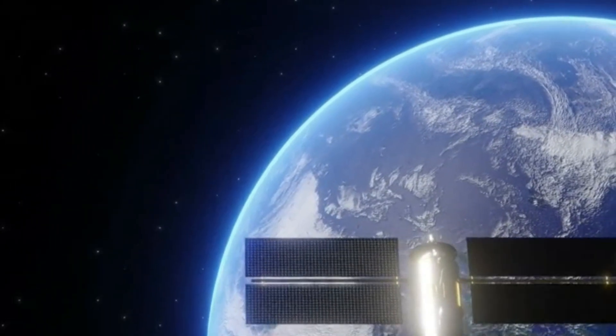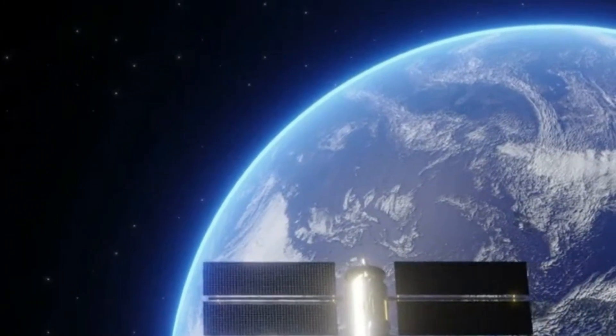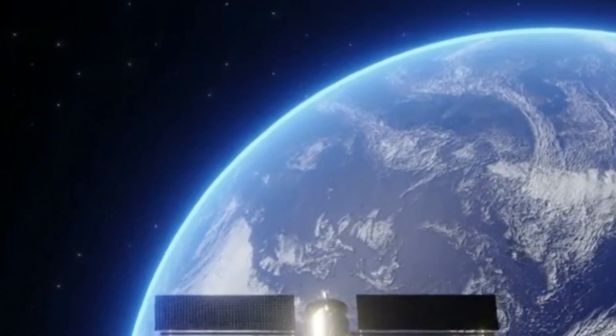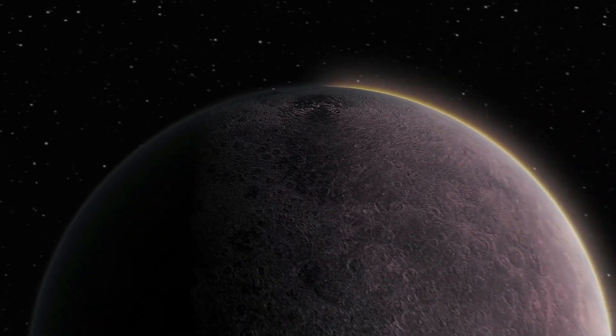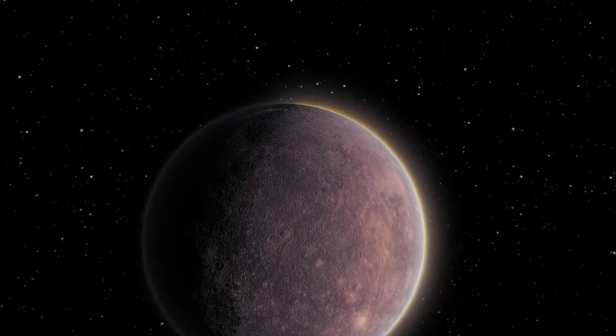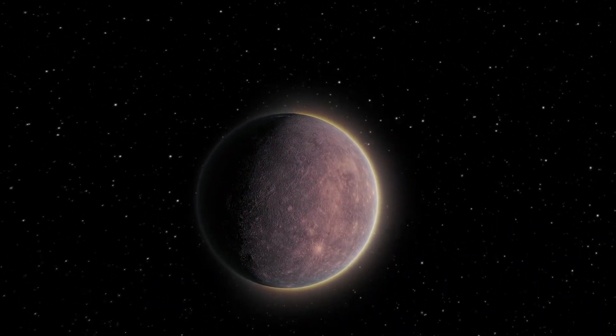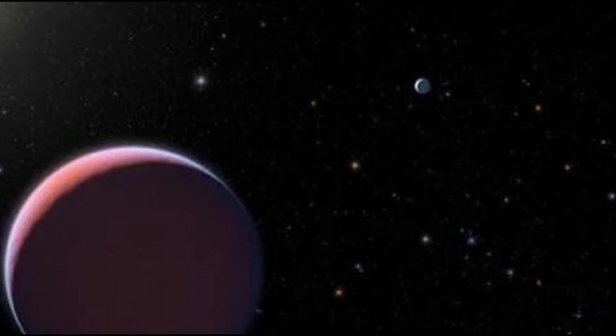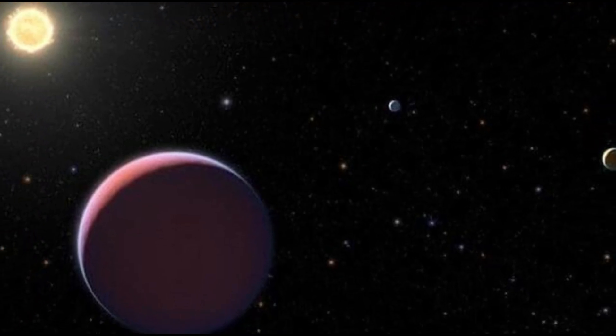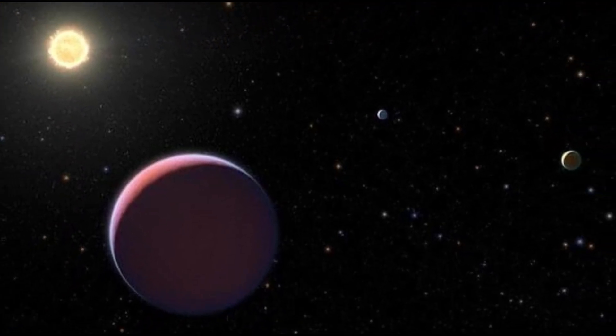The team discovered that the only way to explain the unexpected timing was the presence of a fourth planet, which they've named Kepler-51e. This new planet's gravitational pull appears to be influencing the orbits of the other planets in the system, causing them to shift ever so slightly, leading to those early transits.